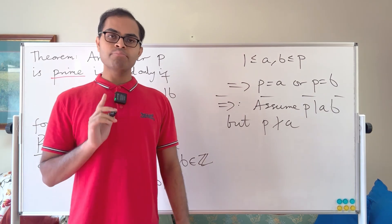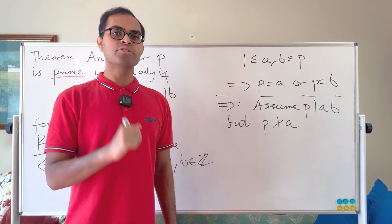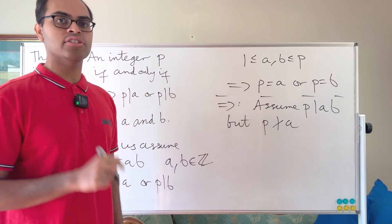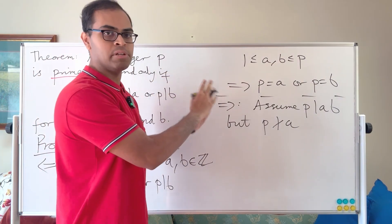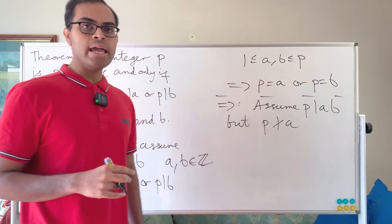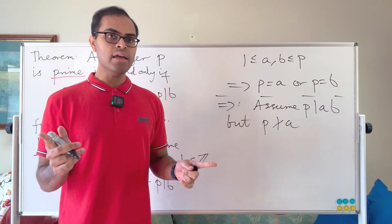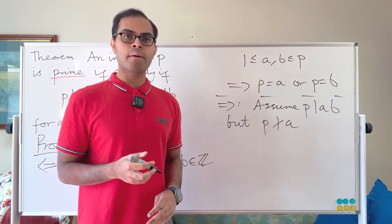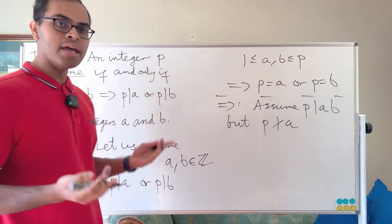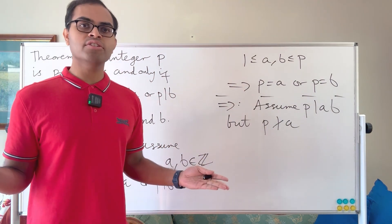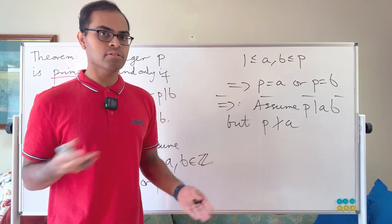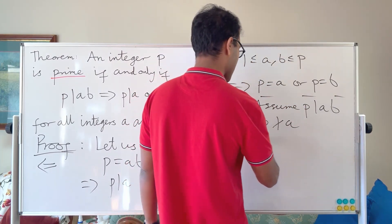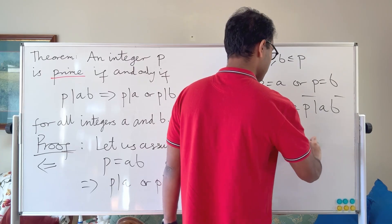Here we're going to use an important statement called Bézout's theorem — it's pretty intuitive and I'll give you the proof in a linked video. We know that p doesn't divide a, which means p and a are relatively prime: they don't have any common factors other than 1. Why? Because the only factors of p are 1 and p. If p does not divide a, the only common factor of p and a has to be 1. So therefore p and a are relatively prime, meaning the greatest common divisor of a and p equals 1.